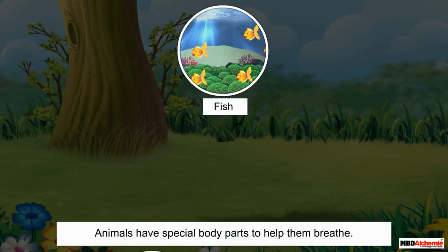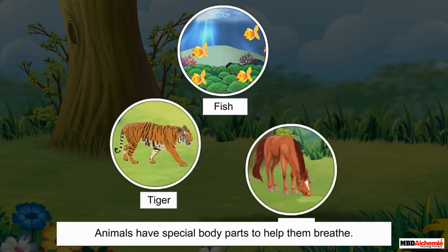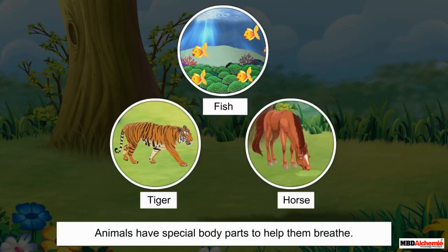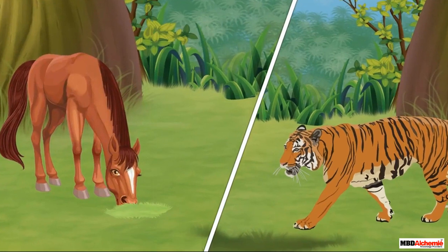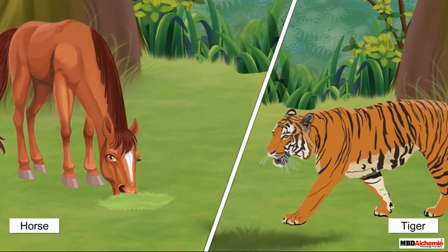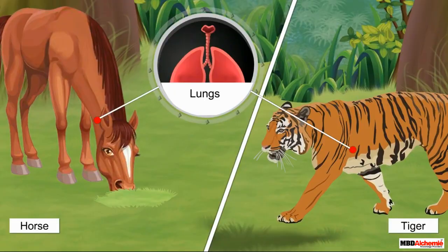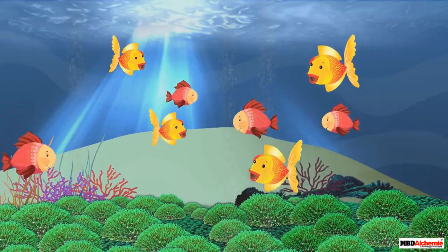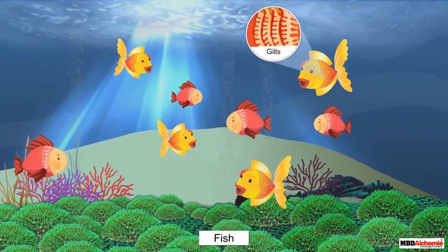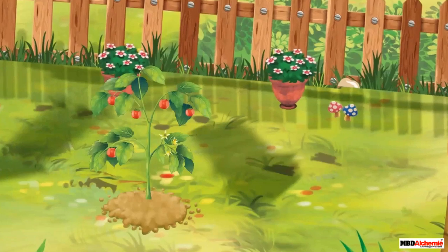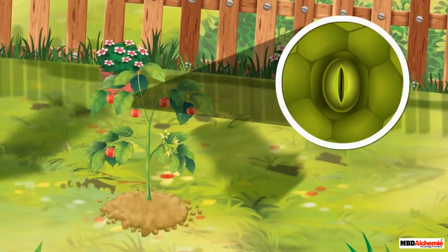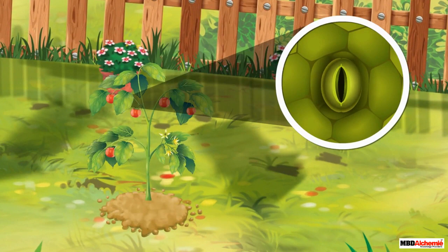Animals have special body parts to help them breathe. Some animals, like horses and tigers, have lungs to breathe. Other animals, like fish, have gills to breathe. Plants, on the other hand, have tiny openings on their leaves that help them breathe. These openings are called stomata.